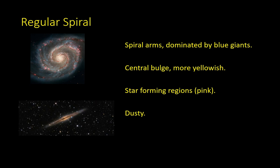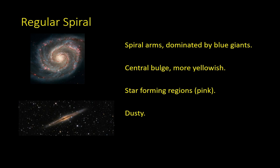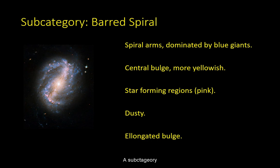At the center of the spiral structure is the galactic bulge, which always has a more yellowish color. The spiral arms also contain visible star-forming regions, which often appear a little bit more pinkish, as well as lots of dark dust. A subcategory of spiral galaxies are barred spirals, which are often described as having an elongated bulge and an S shape.